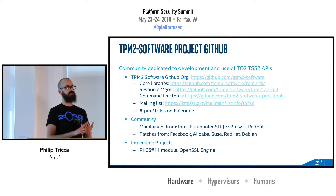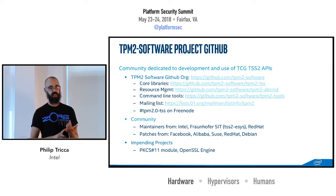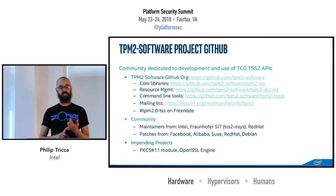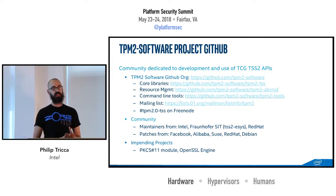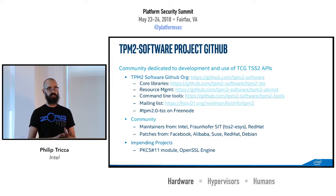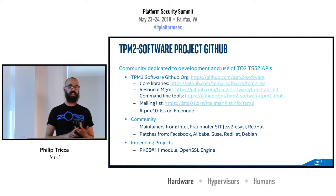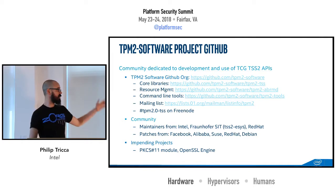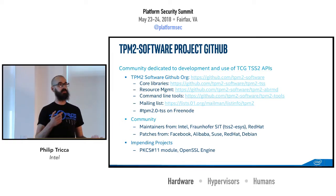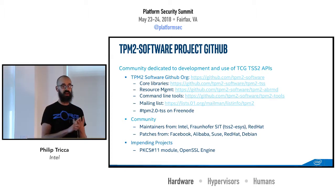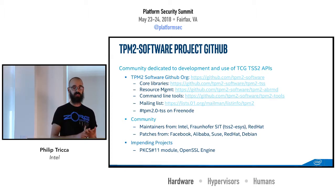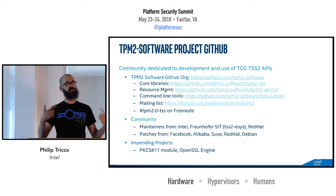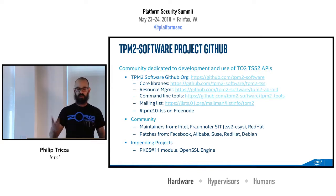We've had good interaction with Red Hat — one of our maintainers on the tools project is a guy from Red Hat and he's phenomenal. Some of our earliest adopters: Facebook was one of the first to use this, and we've had patches come in from Alibaba. SUSE gave me really good code reviews on the resource management daemon and helped me catch some embarrassing bugs. We've had patches from Debian and a pile from Red Hat. We're also working on a PKCS#11 module I'm hoping to get out in the next month or so, and Fraunhofer has been working on an OpenSSL engine as well — this thing is getting some momentum.